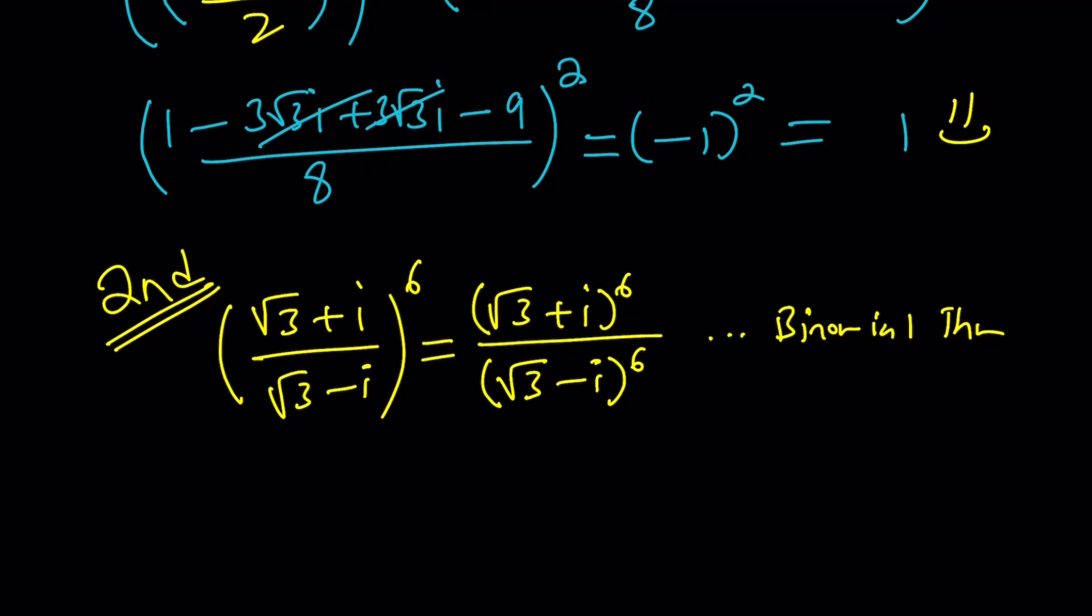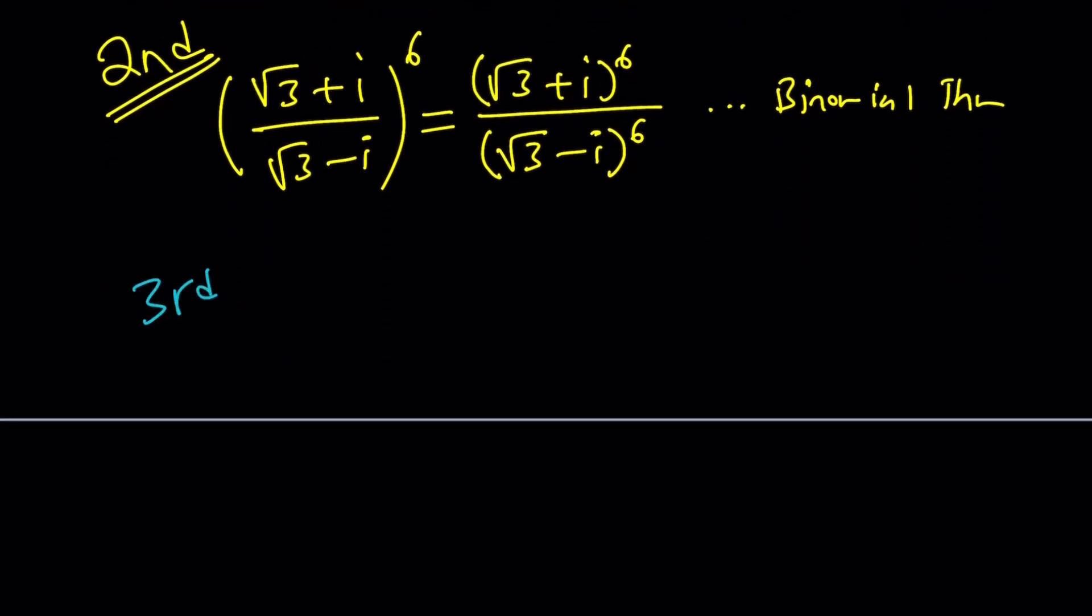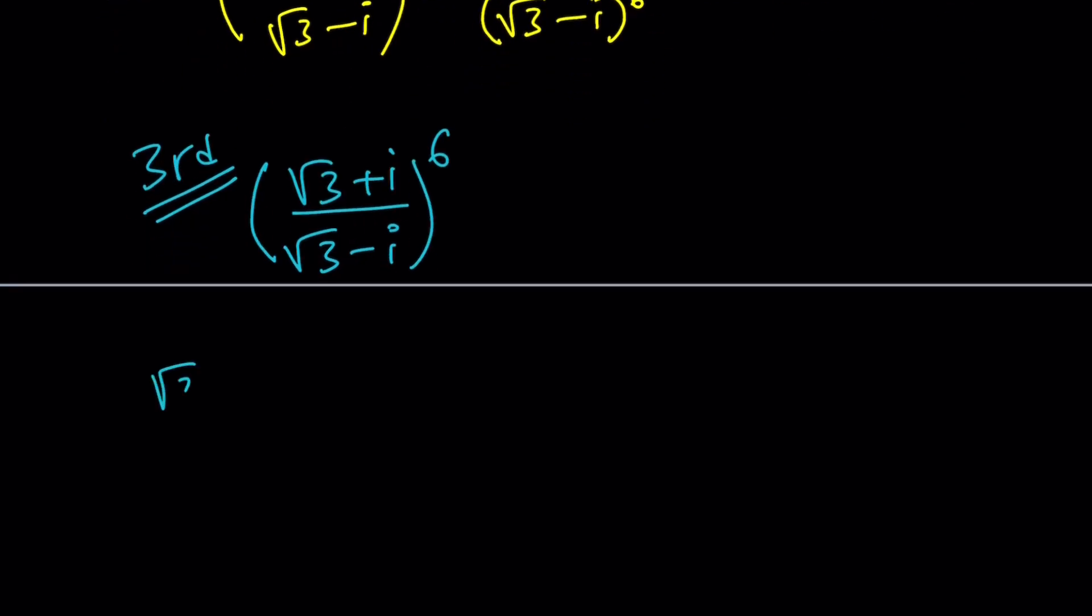Make sense? Okay, cool. After the 3rd method, if I can come up with a 4th one, maybe we can talk about it. Because I said at least 3 methods, right? To be on the safe side. Okay. So we have square root of 3 plus i over square root of 3 minus i to the power 6. What I'd like to do is take the numerator and turn this into polar form.